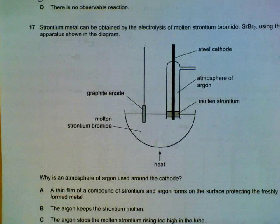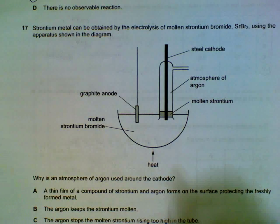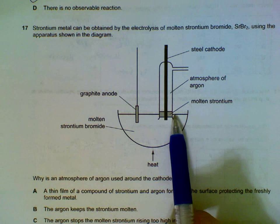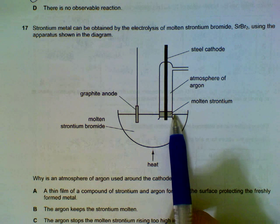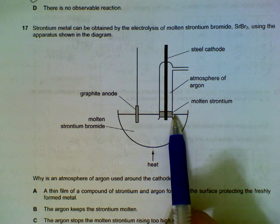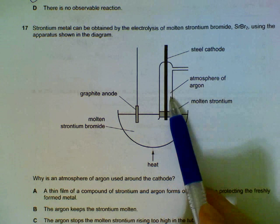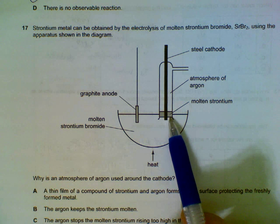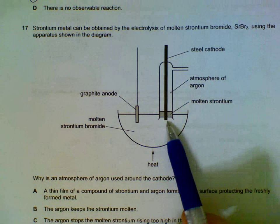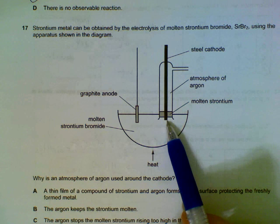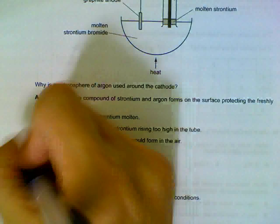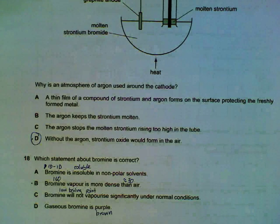Number 17, we have electrolysis and molten strontium form. Strontium is from group 2, way at the bottom. It is a very reactive metal, so we need an atmosphere of argon to make sure that the strontium do not react with oxygen, because otherwise the hot strontium will react with oxygen to form strontium oxide. Keeping an atmosphere of argon will prevent that from happening. So option is D.